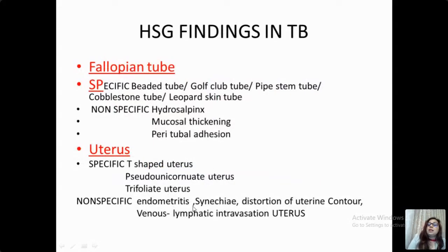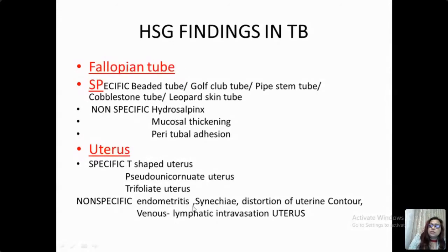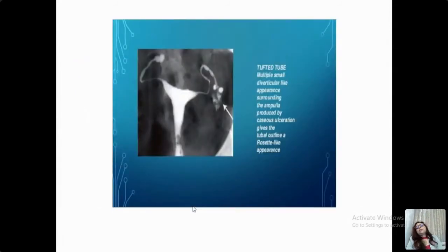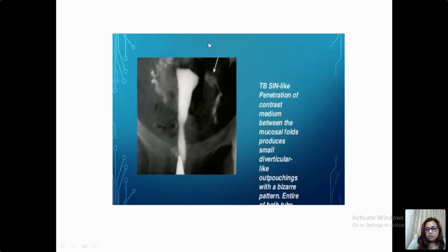Various findings are peculiarly seen in tuberculosis of the fallopian tubes and uterus. Specific tubal appearances include: the golf club tube, pipe stem tube, cobblestone tube, leopard skin tube, and the beaded appearance due to multiple strictures followed by dilatations. Non-specific findings include hydrosalpinx, mucosal thickening, and peritubal adhesions. In the uterus, TB can produce a T-shaped uterus due to marked synechiae and distortion of the endometrial cavity, a pseudo-unicornuate appearance, a trifoliate uterus, and non-specific synechiae with distortion of contour. Venous and lymphatic intravasation of contrast may also be seen.